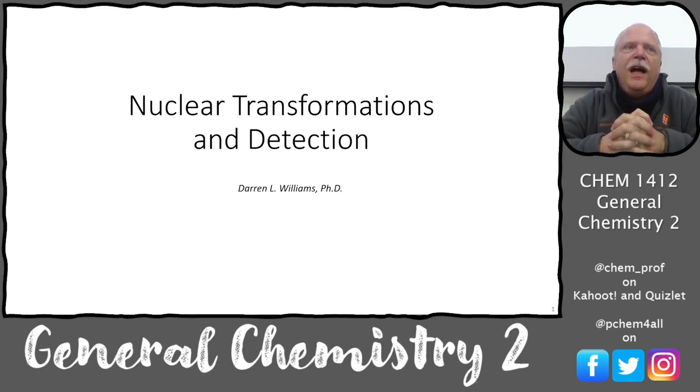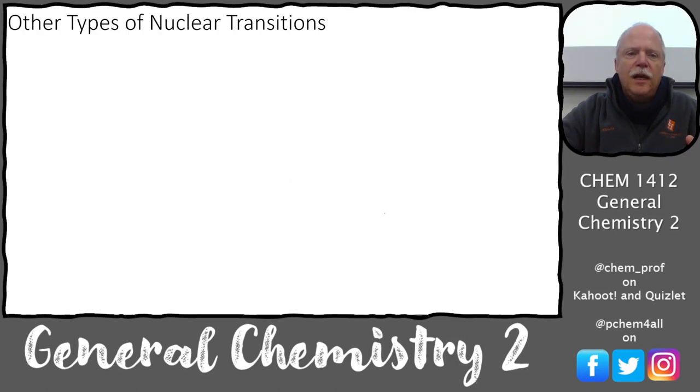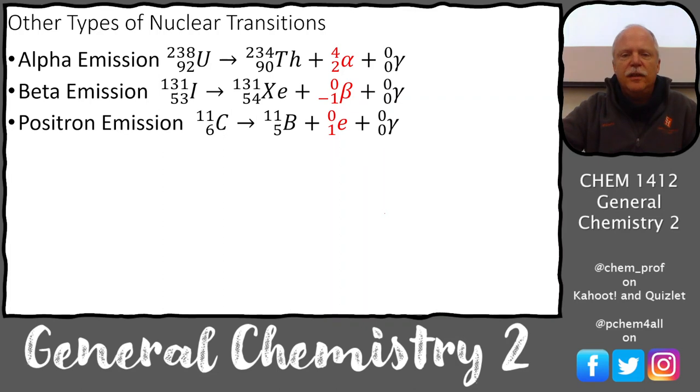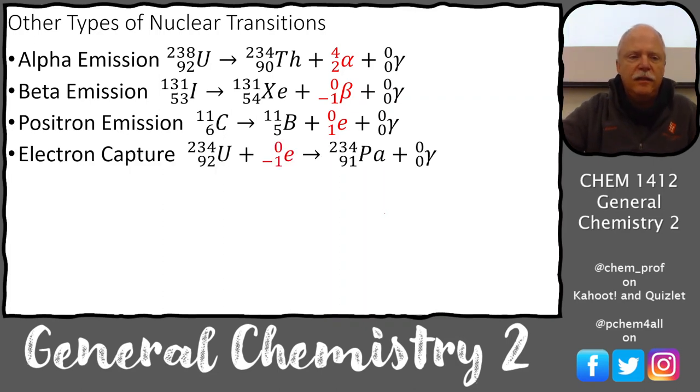We got about halfway through all the different nuclear transformations last time with nuclear decay, so we'll continue on with that. I've got lots of problems in the lecture that you can do on the paper. Let's look at these nuclear transitions we worked on last time. We did alpha emission, beta emission, and positron emission, then skipped past electron capture and did annihilation.